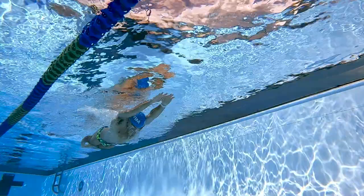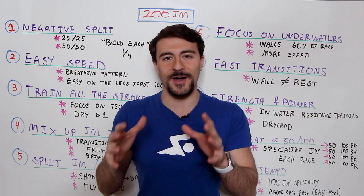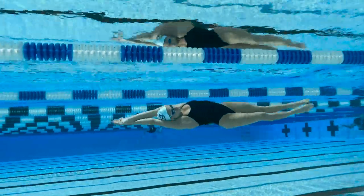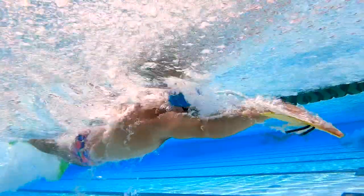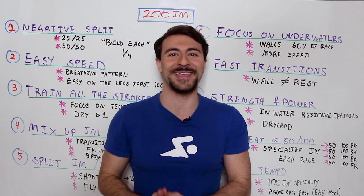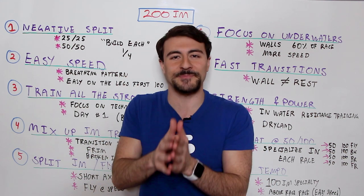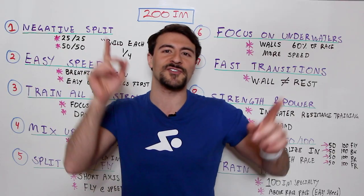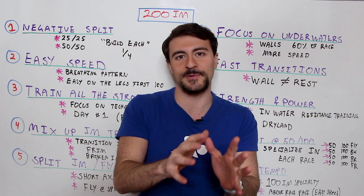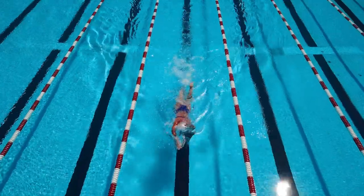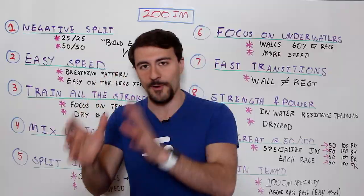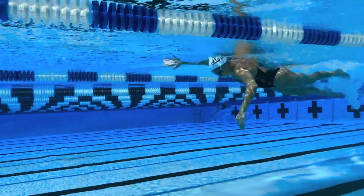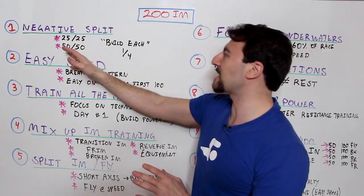Welcome to another episode of Whiteboard Wednesday. Today I'm going to share how to swim the 200 IM — the individual medley: butterfly, backstroke, breaststroke, and freestyle. Whether you're trying to make the Olympic final or just survive the 200 IM, you've come to the right place. I've got 10 tips for you. The first five are similar to the 400 IM, and then five more focus on what makes the 200 IM completely different.